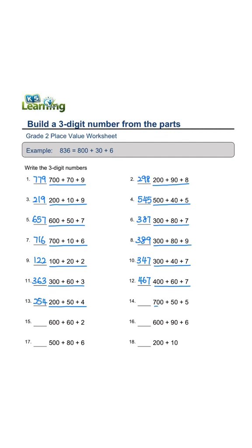700 plus 50 plus 5 equals 755. 600 plus 60 plus 2 equals 662. 600 plus 90 plus 6 equals 696.